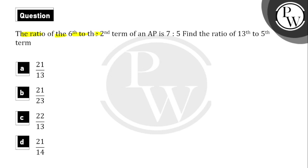The ratio of the 6th to the 2nd term of an AP is 7 is to 5. Find the ratio of 13th to 5th term. Four options are given in the question. The ratio given is 6th term and 2nd term.